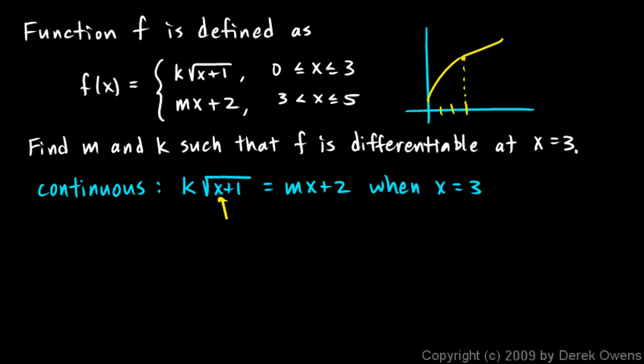So we just need to plug in the value 3 for x right there and see what we get. So this is k times the square root of 3 plus 1 is 4 equals m times 3 plus 2, and I'll just rewrite that a little bit. This is 2k equals 3m plus 2.